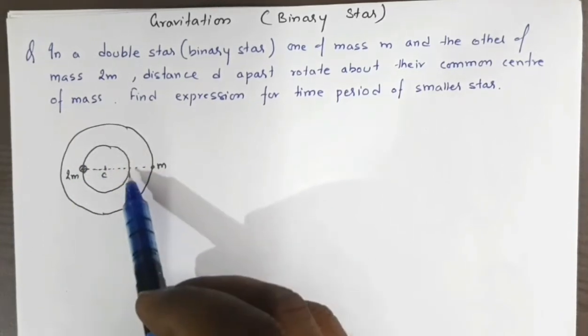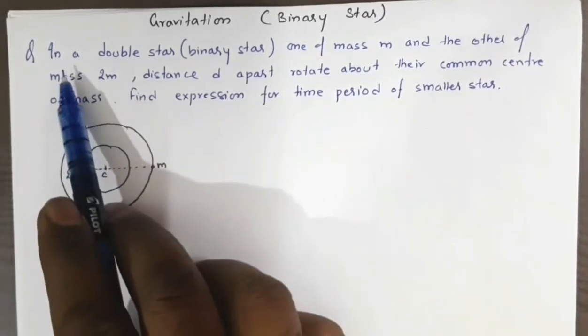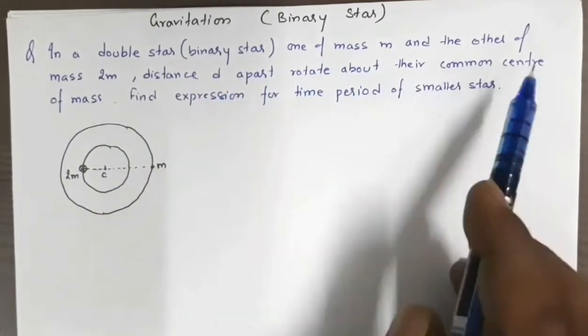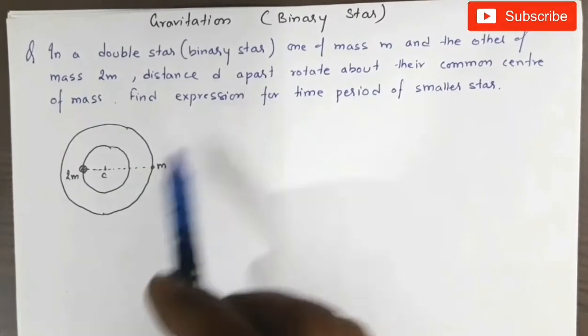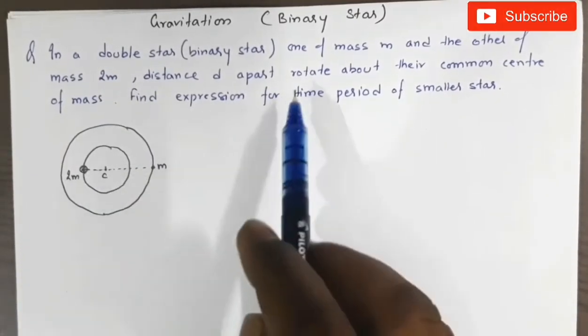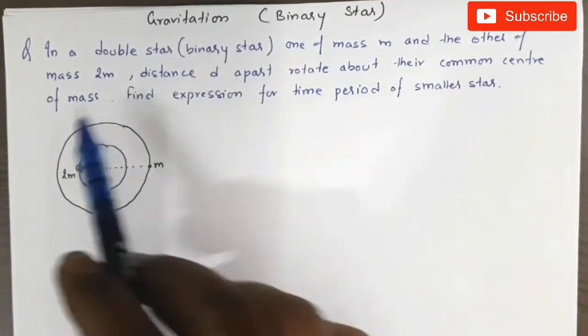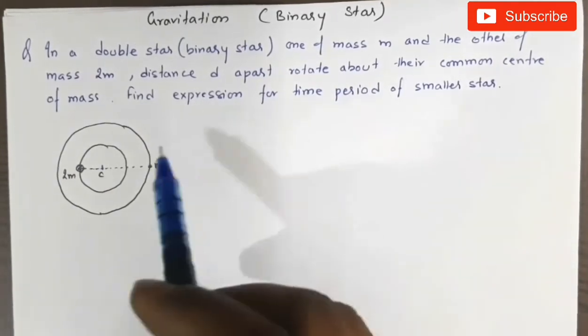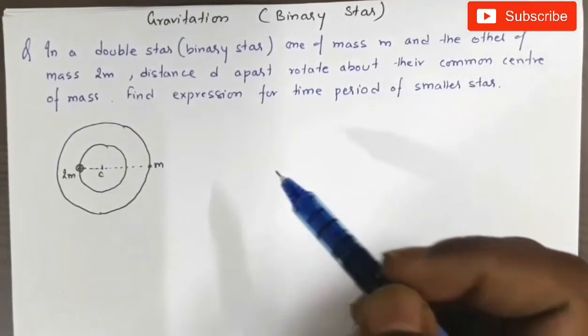The problem states: in a double star or binary star system, one of mass m and the other of mass 2m are distance d apart, rotating about their common center of mass. We need to find the expression for the time period of the smaller star.